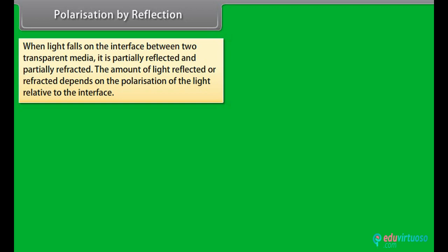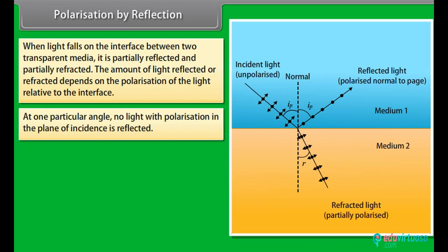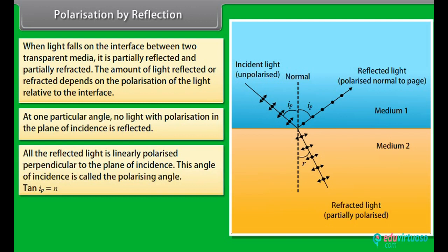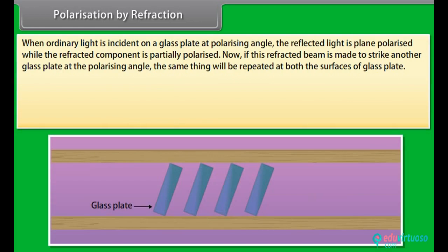Polarization by reflection: when light falls on the interface between two transparent media, it is partially reflected and partially refracted. At one particular angle of incidence, no light with polarization in the plane of incidence is reflected — all the reflected light is linearly polarized perpendicular to the plane of incidence. This angle is called the polarizing angle. Brewster's law: tan iₚ = N, where N is the refractive index of the medium on which the light is incident.